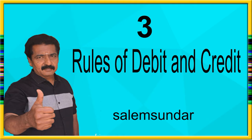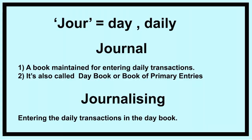We know which one is to debit and which one is to credit, and the next step is journalizing. The word 'journal' is from a French term meaning 'day' or 'daily.' Journal means a daily record — a book maintained for entering daily transactions. It is also called a day book or book of primary entries. Writing in the journal is called journalizing.